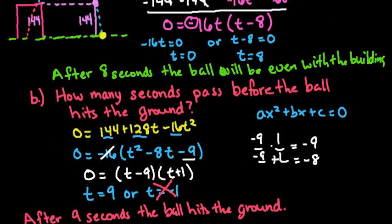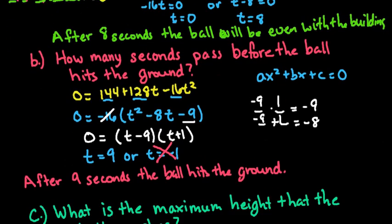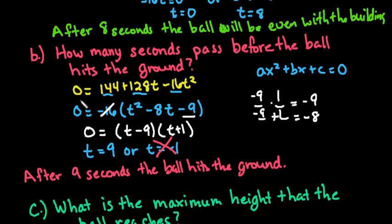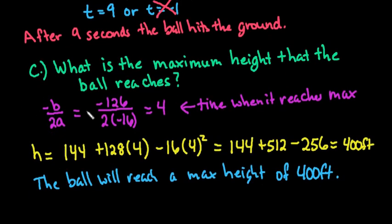To recap: if the problem says equal to the top of the building, set the heights equal and cancel them out. If it asks how long before it reaches the ground, replace the height with 0. The quadratic formula will always work; factoring doesn't always work — the equation has to be factorable. The maximum height is just another name for the vertex, which always occurs at x-coordinate negative b over 2a. To find the y-coordinate, simply plug that value back in.